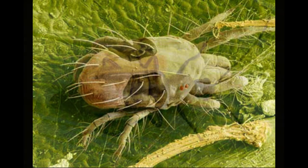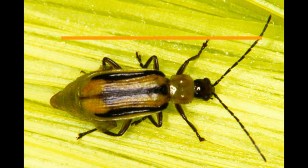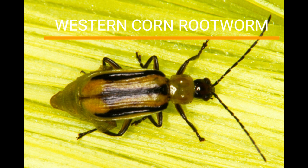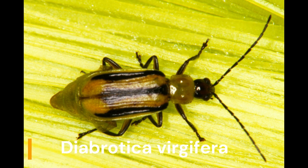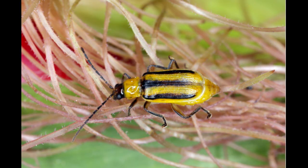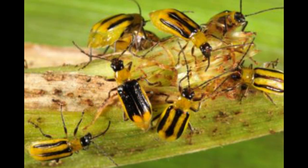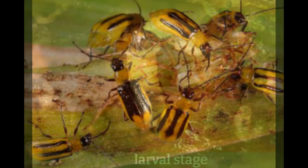The sixth most popular herbivore insect is western corn rootworm, whose scientific name is Diabrotica virgifera. The feeding mechanism of these western corn rootworms is chewing insects, as larvae and adults, and they are generally classified as specialists on maize and a few other grasses.